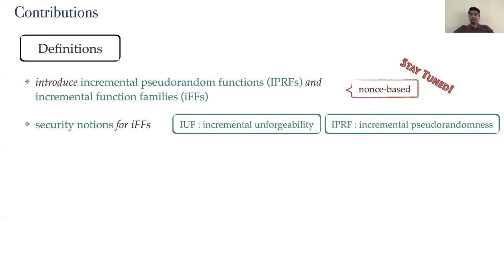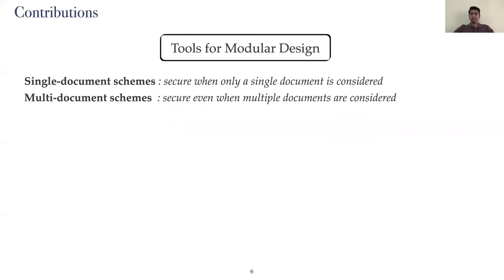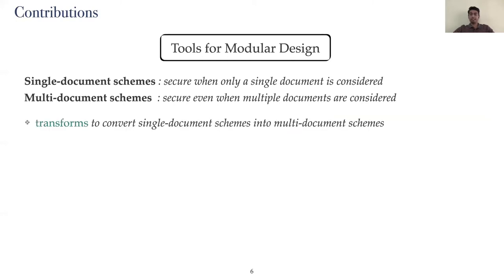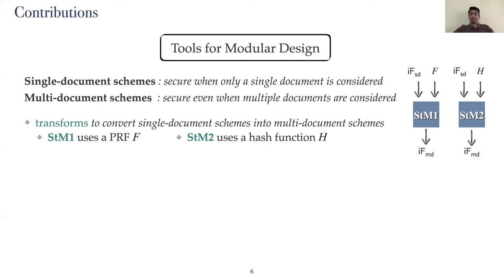We provide security notions for our incremental function families. We first talk about incremental pseudorandomness, which is the extension of PRF security to the nonce-based and incremental settings. Then we cover incremental unforgeability, which is an extension of the basic security definition from Bellare et al. 1995 and is used for incremental message authentication. Schemes can be considered for two scenarios: a single document scheme, where security is guaranteed only when a single document is being edited, and multi-document schemes, where security holds even when there are multiple documents with different identities being edited simultaneously. We provide transforms that convert single-document schemes to multi-document schemes, working for both incremental unforgeability and incremental pseudorandomness.